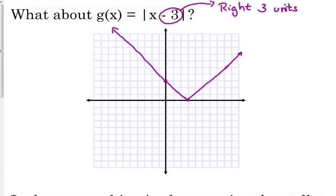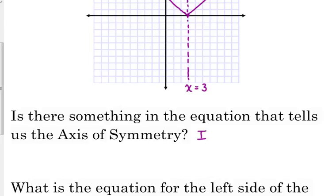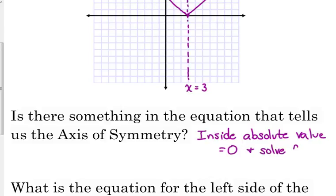The axis of symmetry on this graph is x equals positive 3. To find the axis of symmetry, take what's inside the absolute value, set it equal to 0, and solve for x. In this case, x minus 3 equals 0, so adding 3 to both sides gives x equals 3. That value also becomes the number used in the inequality of the piecewise function.